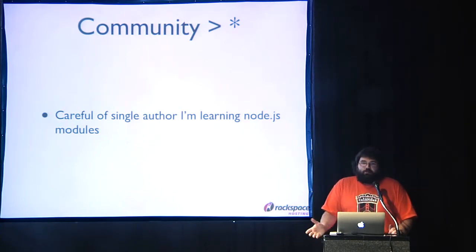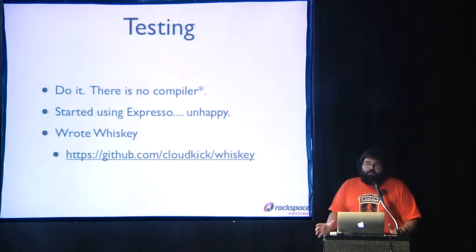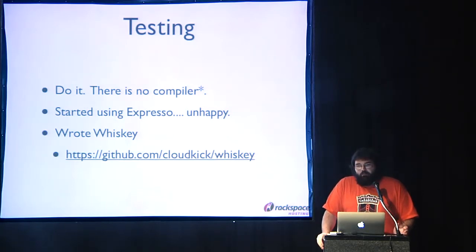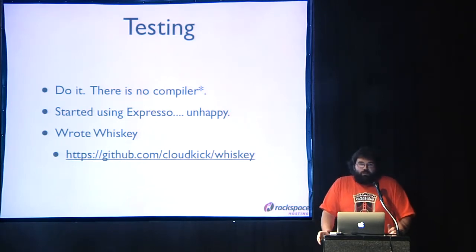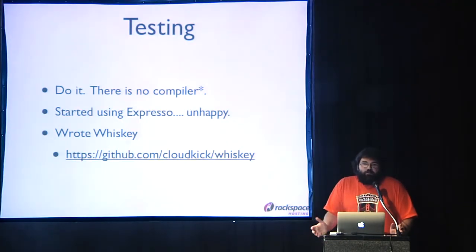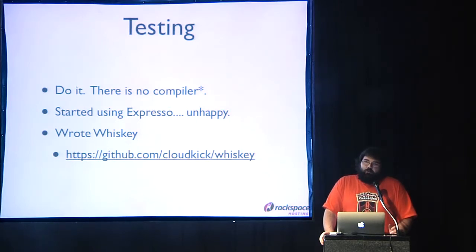A big thing we learned when we started doing Node is that we were originally a Twisted Python shop, so we had a lot of unit tests already and were doing heavy unit testing. It's very important with JavaScript that there's no compiler, so you really need test cases to show you didn't break something. We started using Expresso, which is pretty common and great for little web apps. But for our service, especially the Agent which has a lot of state, it wasn't sustainable to keep using Expresso.